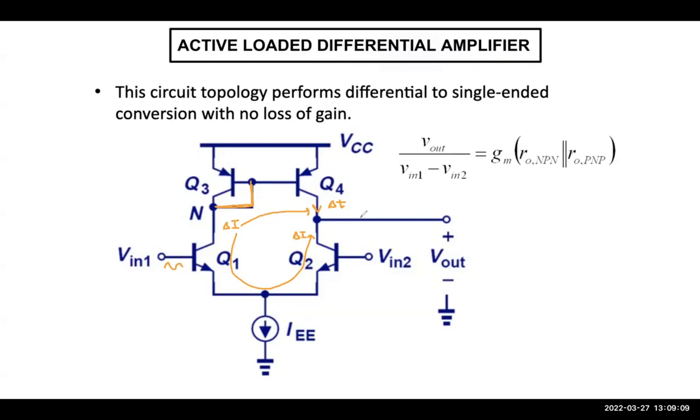So we get the total. Let's say actually delta I over 2. Delta I over 2 is here. So the total current becomes delta I. And as you can see here in this architecture, even we take the output single ended because this replica delta I is copied here through this current mirror. We actually double the current at this node.